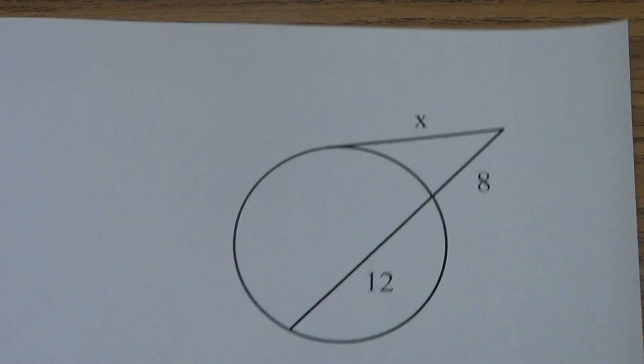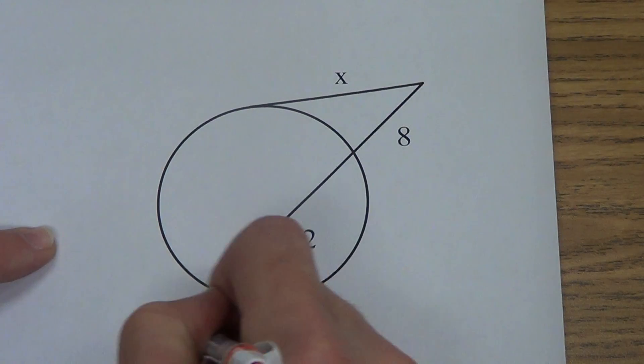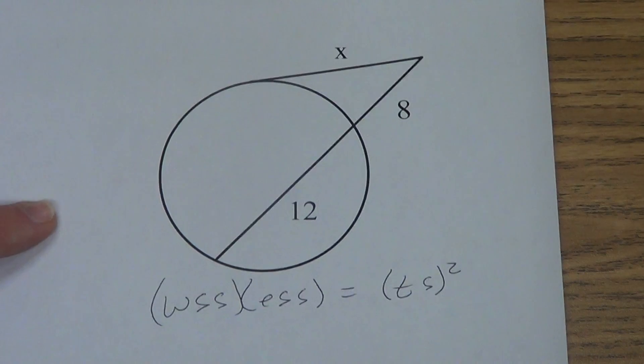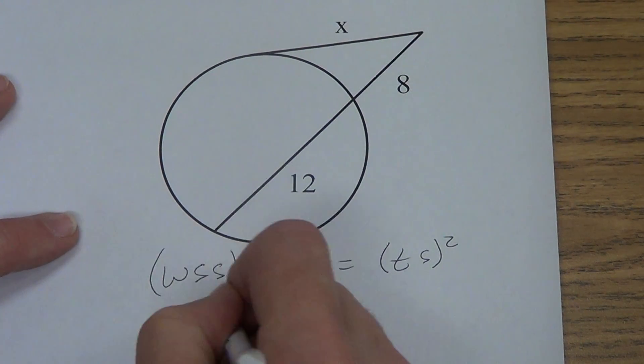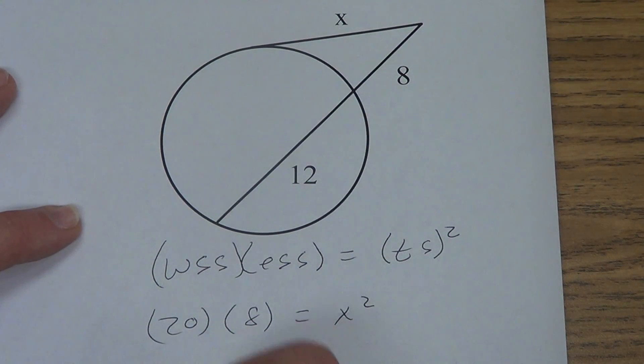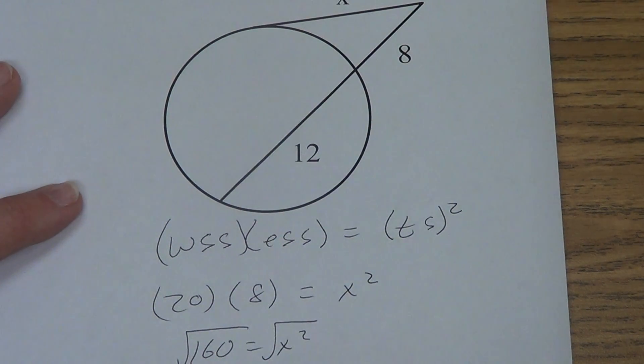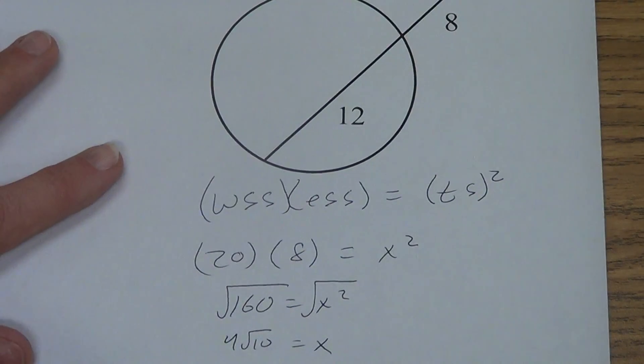Back to a couple easier ones. Theorem 10.16. Hopefully you remember this formula. WSS times ESS equals TS squared. Here we go. Whole thing, 20. External part, 8. X squared. 160 equals X squared. Square root. Break it down as necessary. You should get 4 root 10.